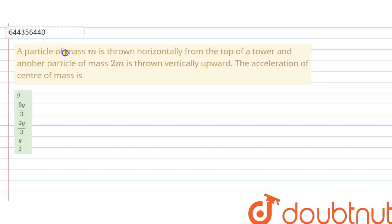A particle of mass m is thrown horizontally from top of a tower and another particle of mass 2m is thrown vertically upward. The acceleration of center of mass is—and there are four options given.